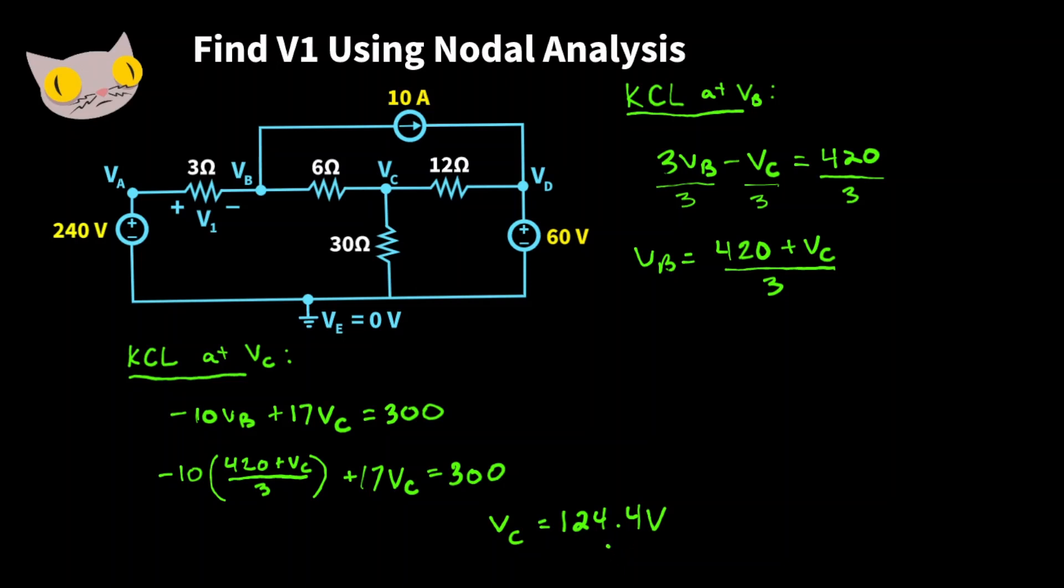Great. Now we have our VC value. Now we can plug this value back up into the first equation. And we can get 3 times VB minus 124.4 equals 420. And solving for VB, we get about 181.5 volts.